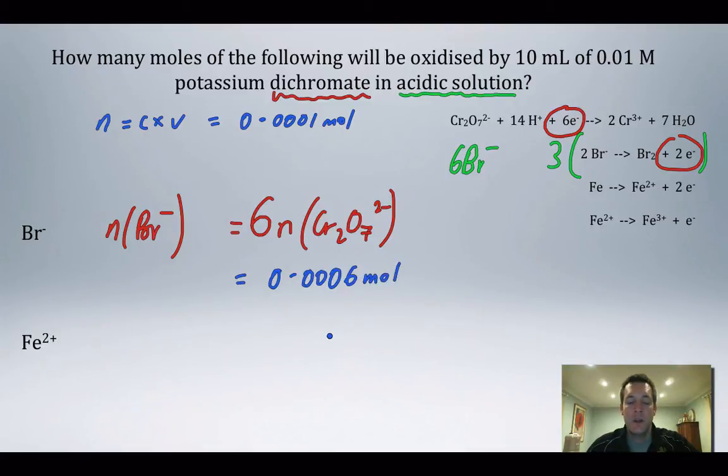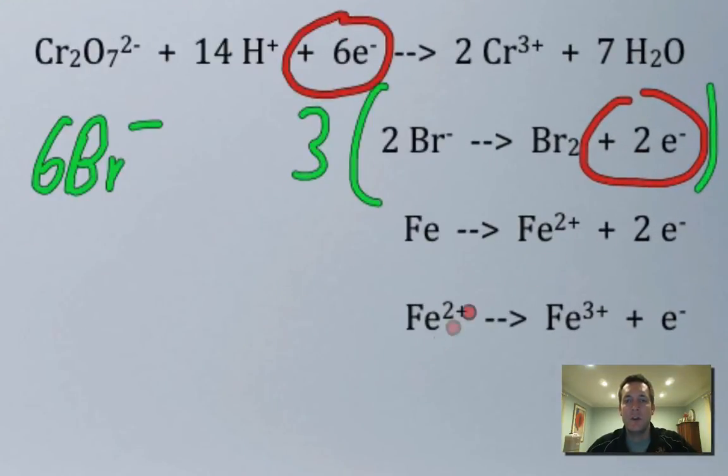Now moving on to the other question. This one's a little bit trickier because there are actually two half equations on your data sheet that involve iron(II). How do you choose between them? You choose the one where iron(II) is losing the electrons that the dichromate is gaining.